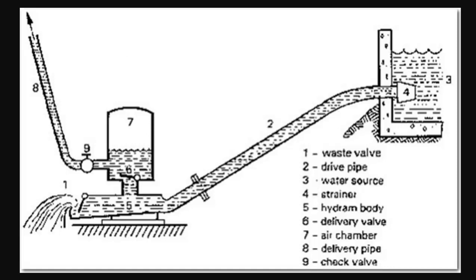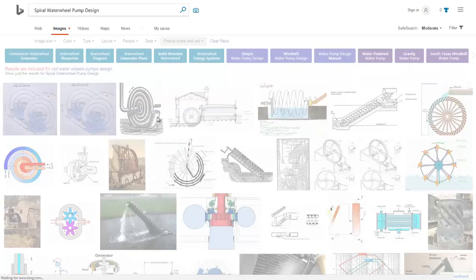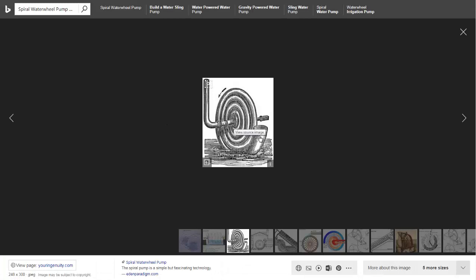Now spiral pumps work sort of like an Archimedes screw where the water will enter one end, and then the flow of the water will keep it going, and then it'll slowly move up and up into this outgoing pipe.